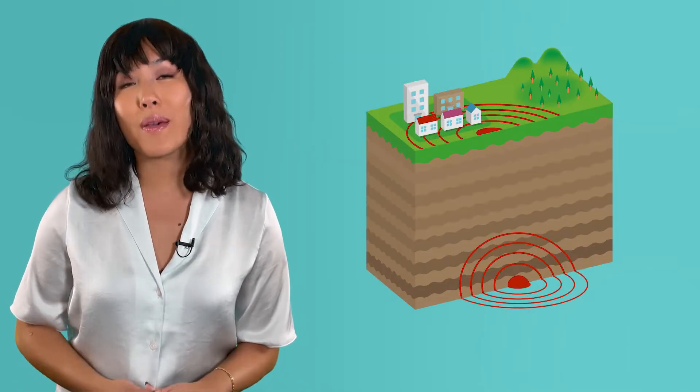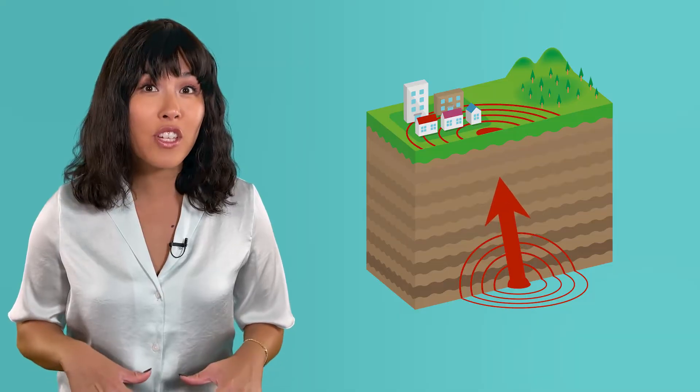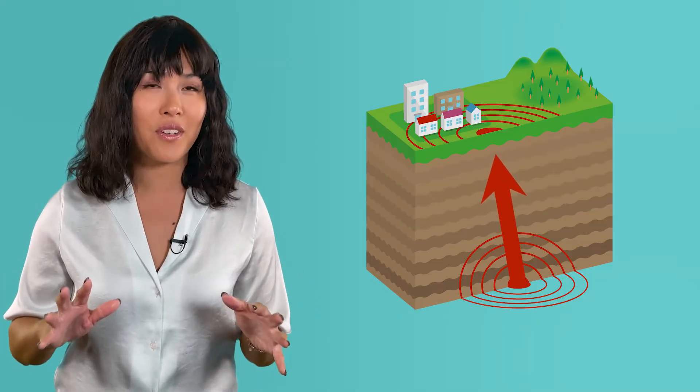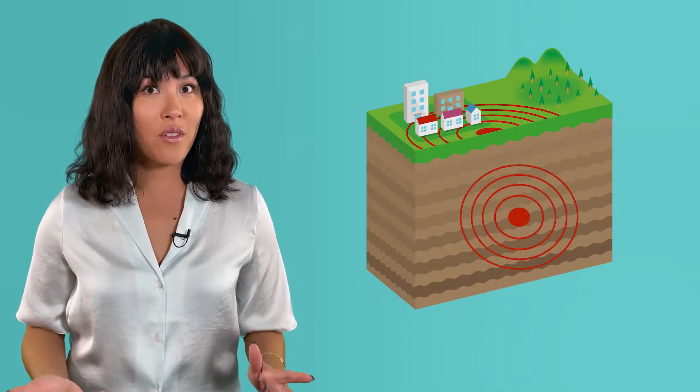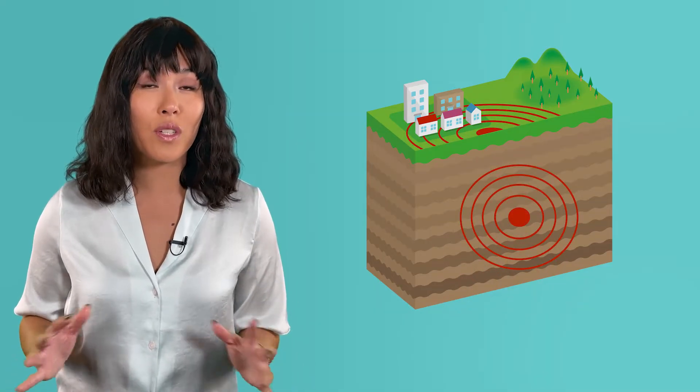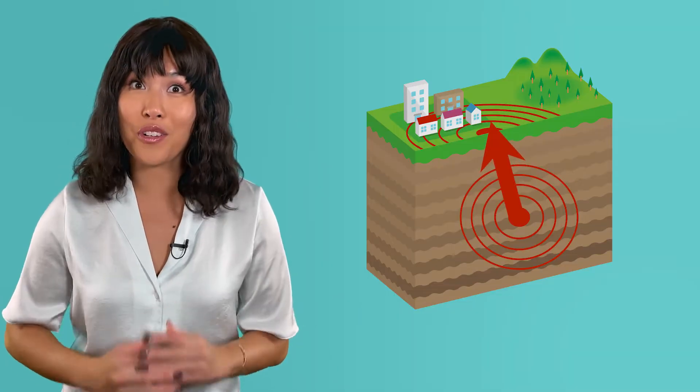When an earthquake's hypocenter is deep underground, the seismic waves lose energy as they travel to the epicenter, meaning the earthquake will be less intense. On the other hand, shallow earthquakes release their energy closer to the surface, leading to higher intensity.